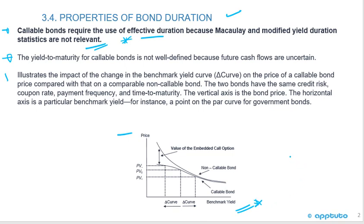What we see here is the callable bond. If rates decrease, the bond can be called. There is a price at which the bond can be called — that is the right of the issuer. The issuer has bought that right.